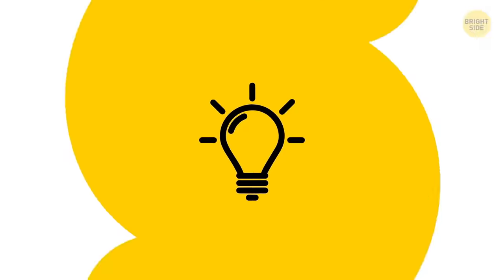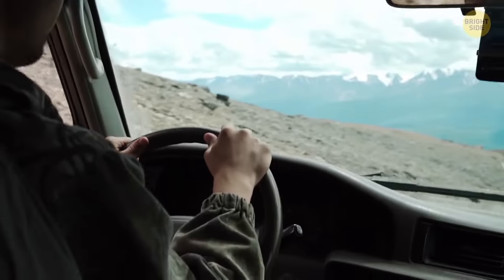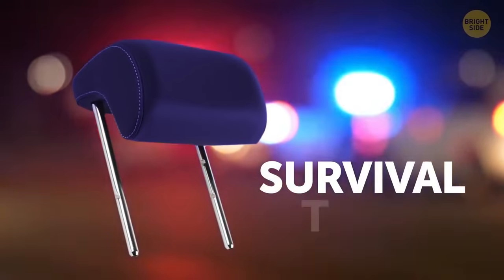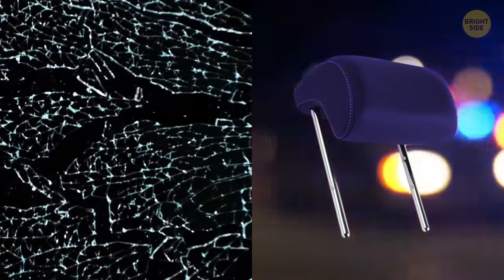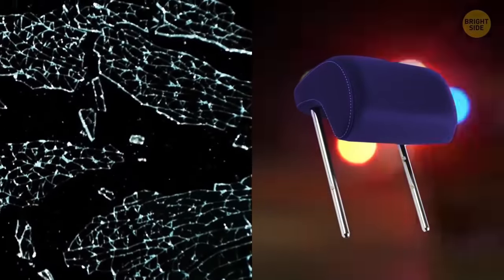Even though it wasn't its original role, a removable headrest can turn into a crucial survival tool. Being trapped in a car, you can use the headrest's metal prods to break the window and get out.